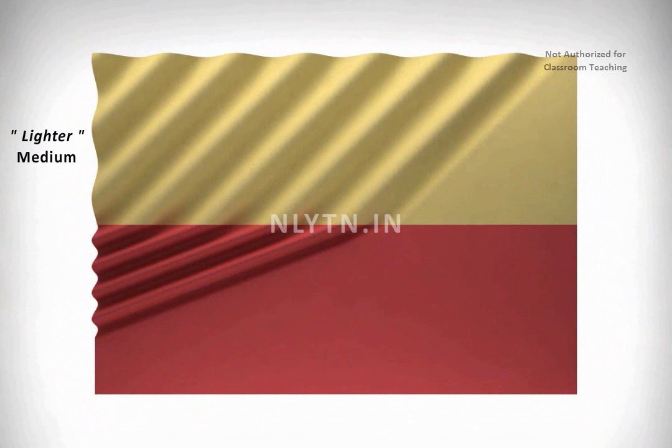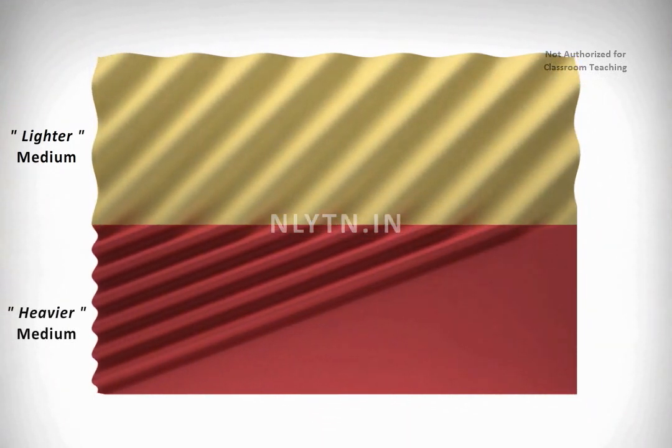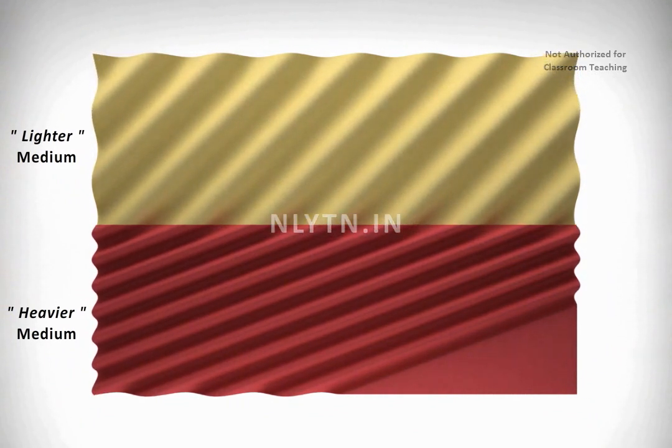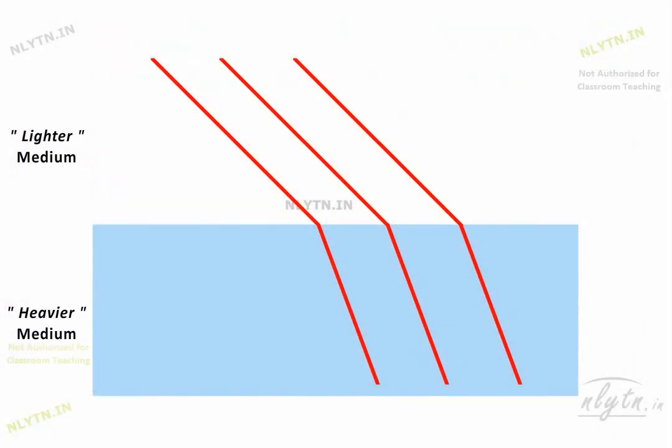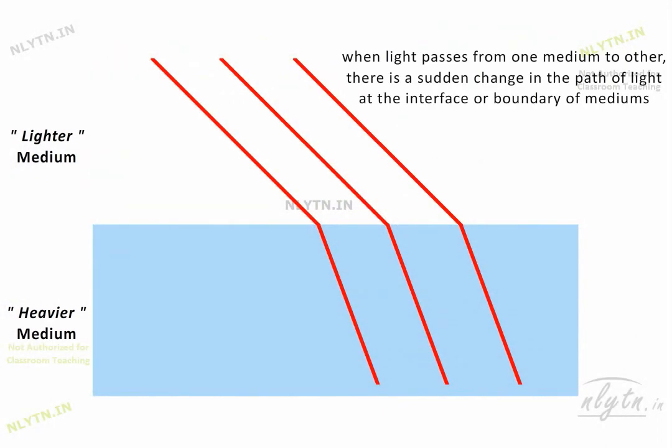So a wave coming from a lighter medium and passing into a heavier medium will look like this. In terms of rays, we can say that when a ray of light passes from one medium to the other, there is a sudden change in its path at the interface or boundary of the two mediums.